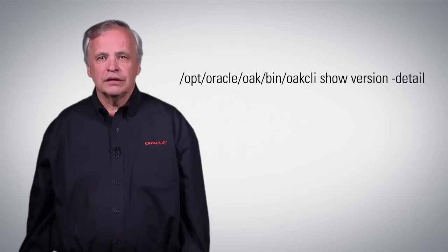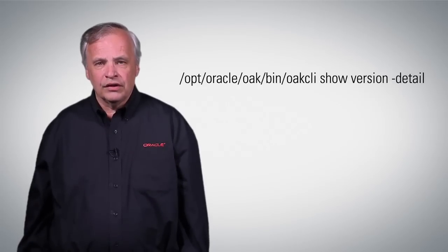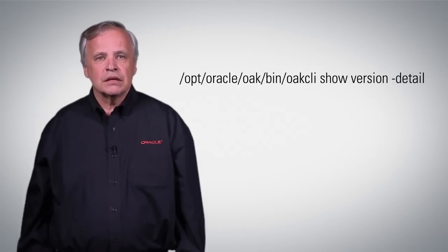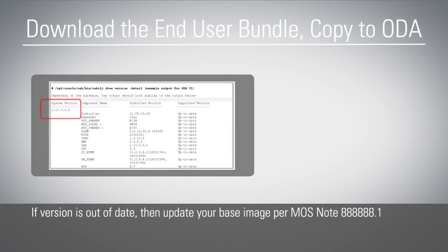Run oakcli showversion -detail. When you run that command, you'll get output that shows what system version you're running in the upper left. If the version is out of date, you're going to have to reimage your database appliance — those instructions are in MOS Note 888-888.1. Let me show you how to identify the right end user bundle with a demo.